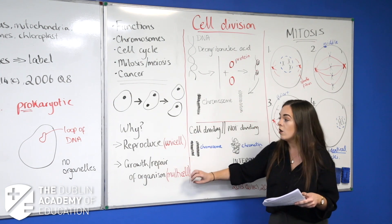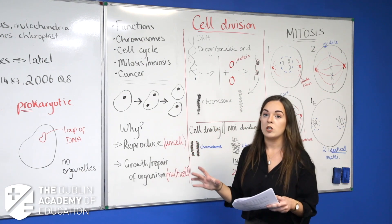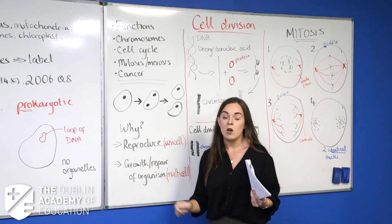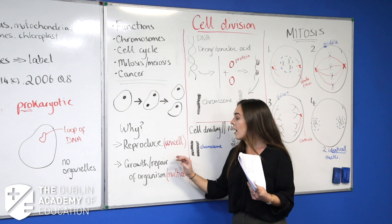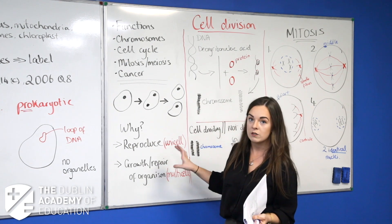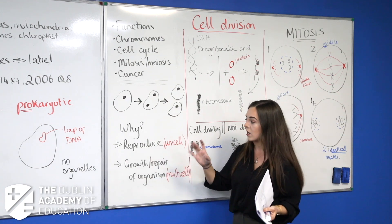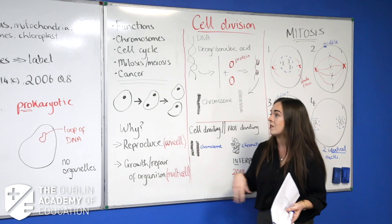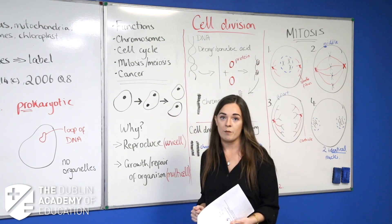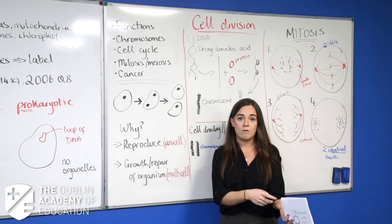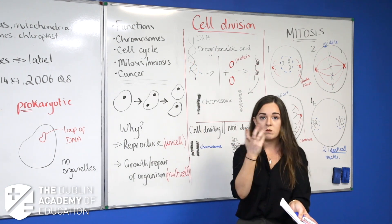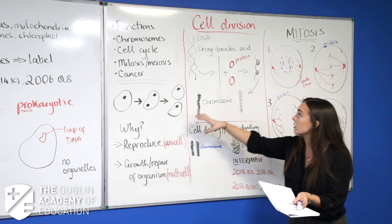When this comes up in the Leaving Cert, don't rush in. Always read the whole question, because sometimes they'll ask for the function of cell division in a multicellular organism, sometimes in a unicellular organism. If it's one cell dividing into two, that's reproduction. For us, one or two cells dividing just means more cells — not a whole new organism.